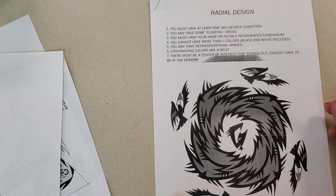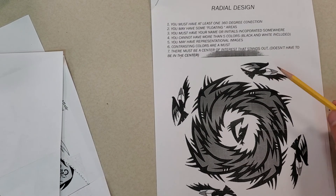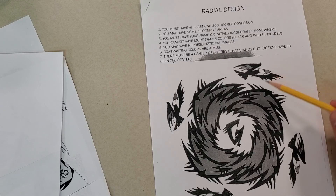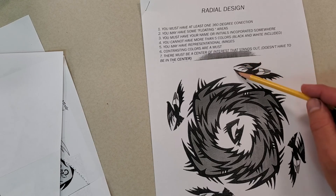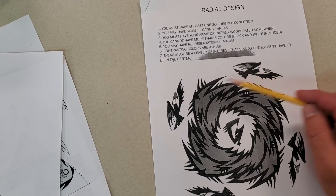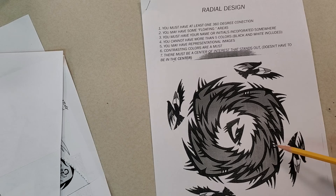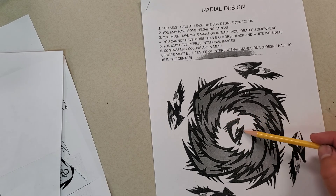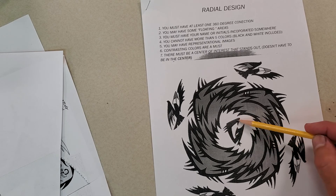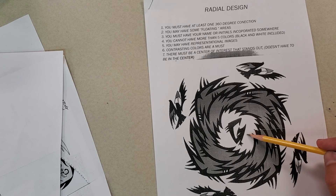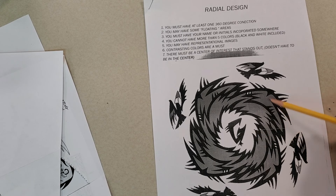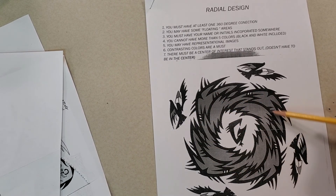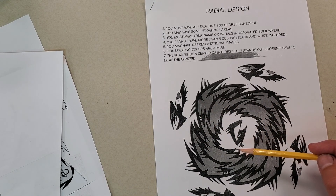You may have some floating areas. So if you take a look at this design here, there's a couple things that float. There's this sort of eagle-like shape that's floating in four spots and then there's the central center of interest. I've got a little logo that looks like a G and that's floating in the area here. So you can have some areas that are floating, but you must have something that connects 360 degrees.